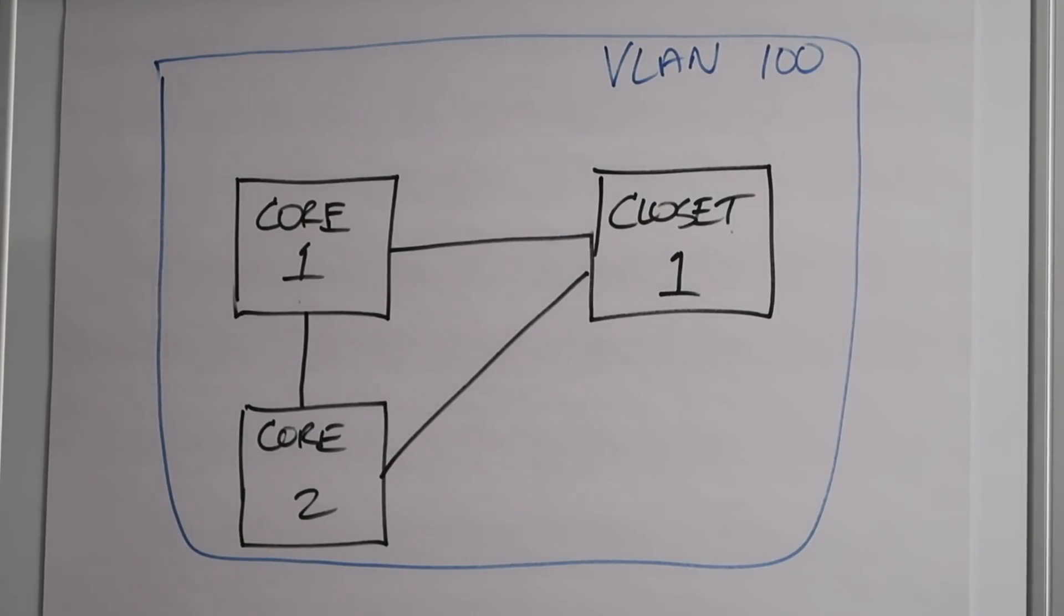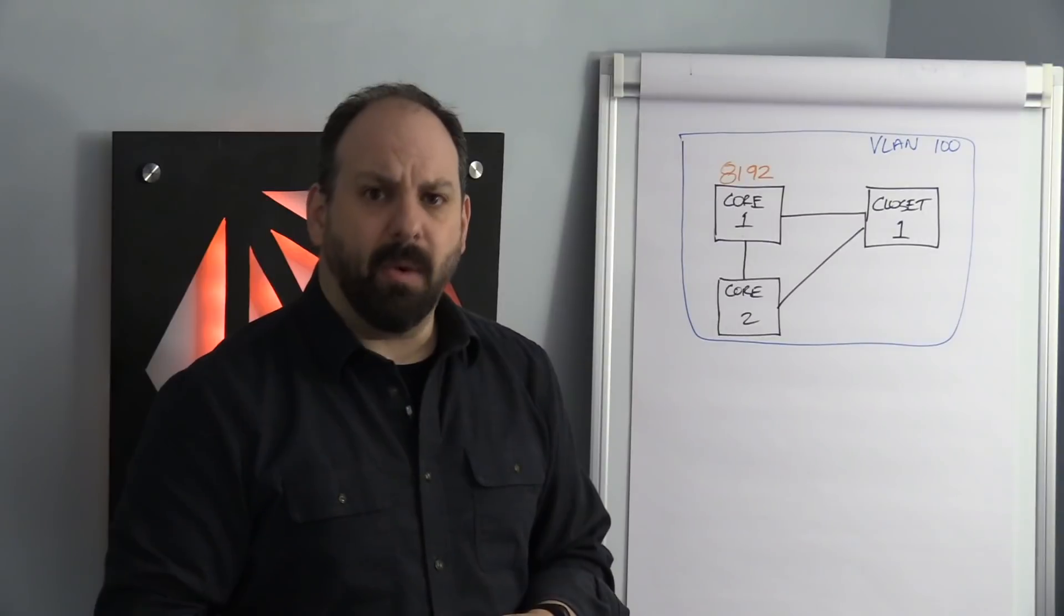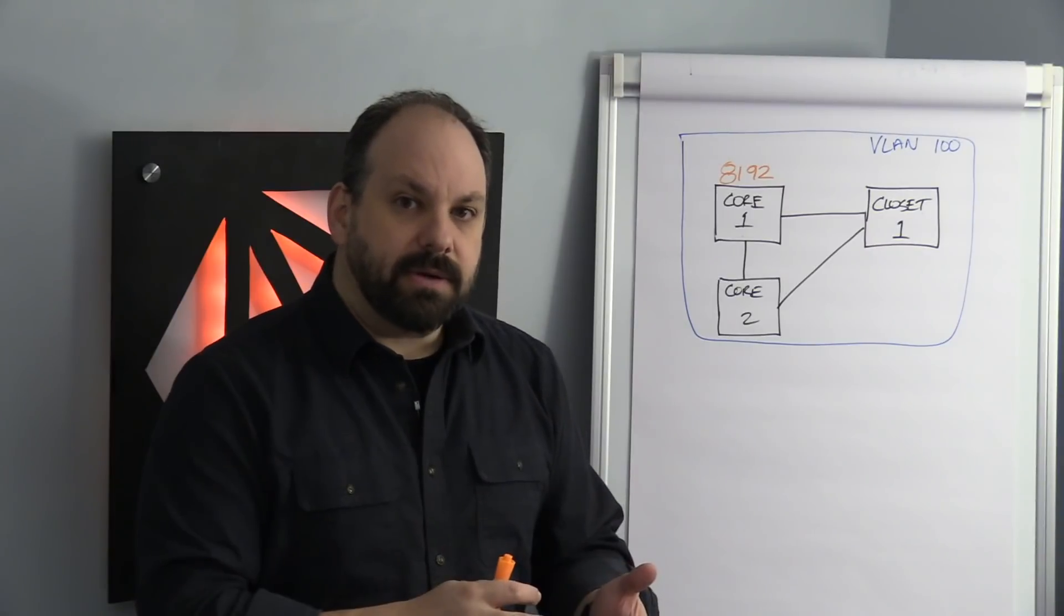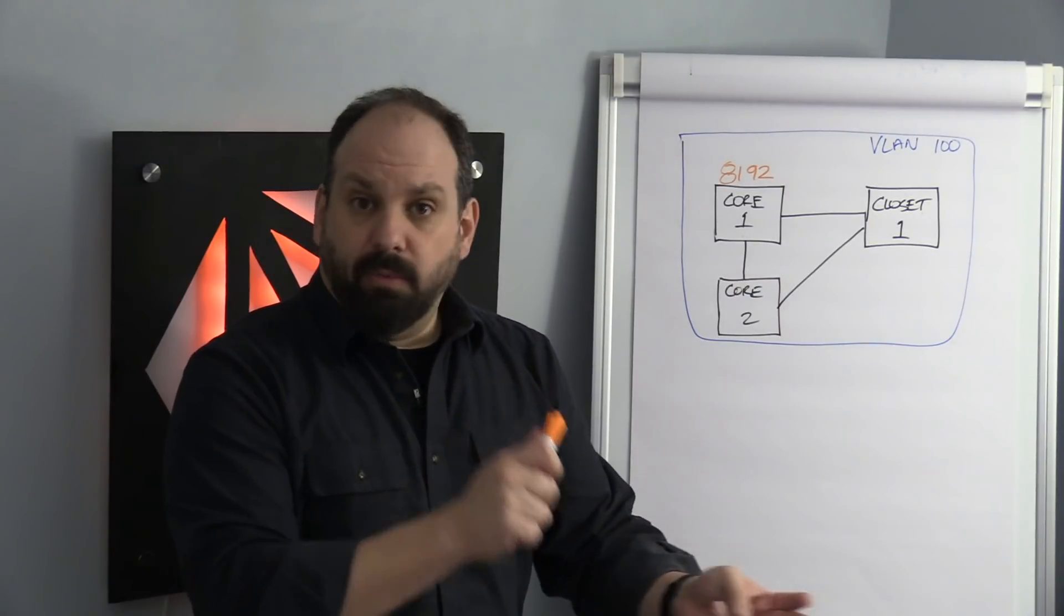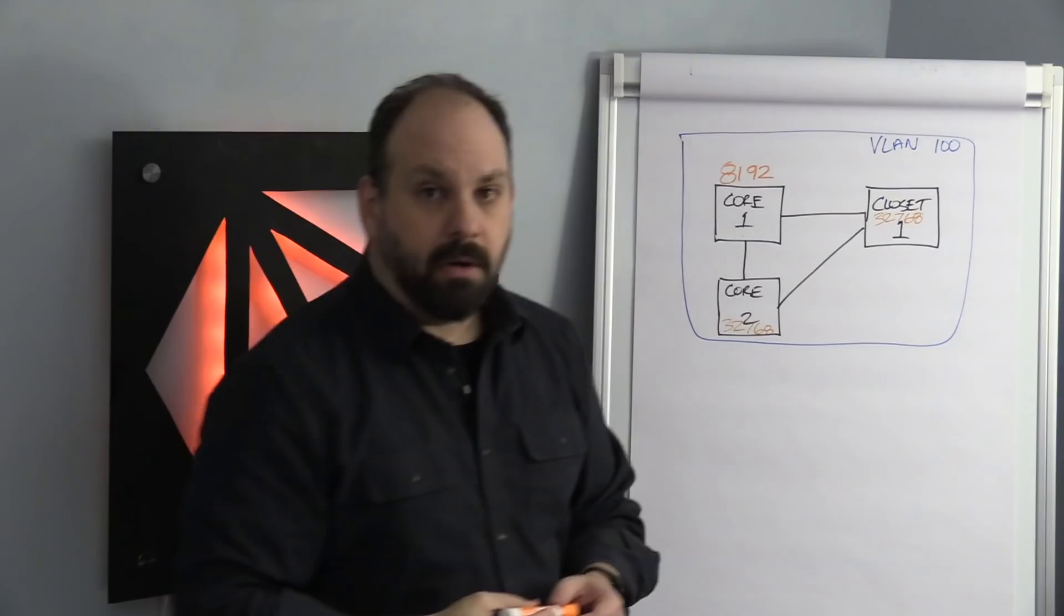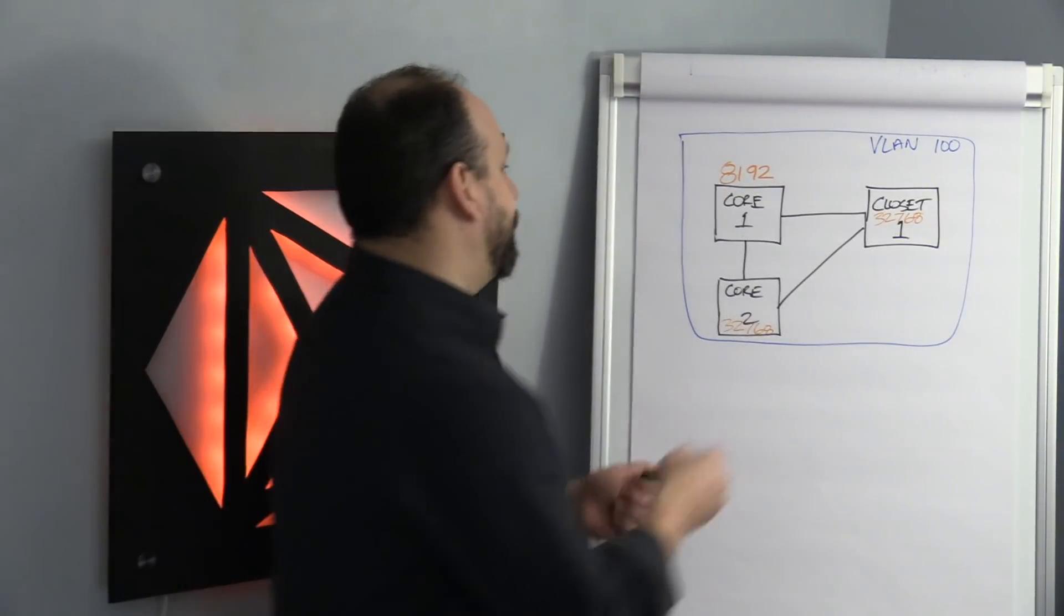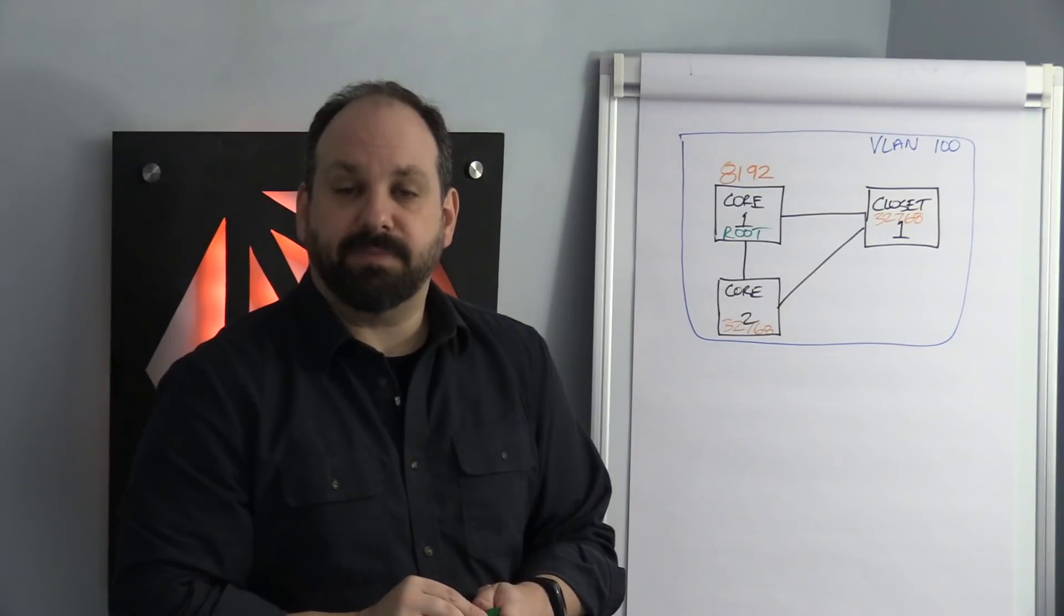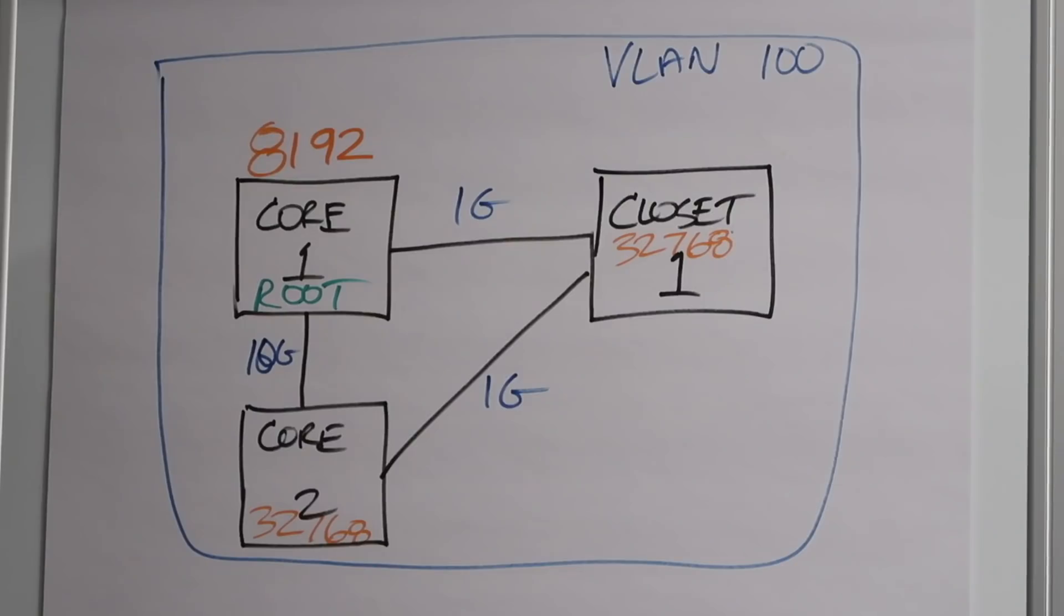So here's the same topology again. Let's say that we've assigned our own bridge priorities. Why did I pick 8192 and not the number 5? Root bridge priority started 0 and go in increments of 4096. So 0, 4096, 8192, whatever the 12,000 number would be 16384, etc. Core switch 2 and closet switch 1 to be 32768. My root bridge will be core 1. He's got the lowest priority. Bridge ID doesn't come into play here because priority is all we need to decide. Lower bridge ID only matters if we need a tiebreaker.